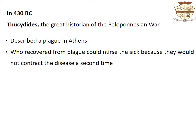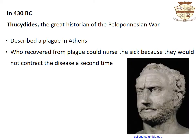The earliest written reference to immunity was by Thucydides, the great historian of the Peloponnesian War. In 430 BC, while describing a plague in Athens, he wrote that only those who had recovered from the plague could nurse the sick, because they would not contract the disease a second time.